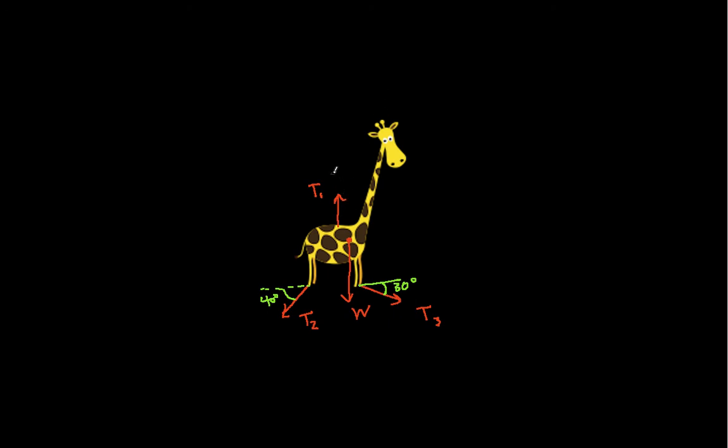So, this is how you draw a free body diagram when the interactions between the body of interest and its environment are supplied by cables. Again, this also applies typically to ropes or wires, things that are bendable, and you can apply a, you can pull with them, you can have a tension in them, but you can't push with them, you can't compress with them. So, this concludes this video. Hopefully, you found it useful.